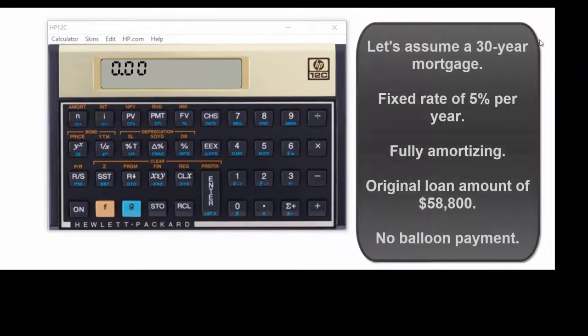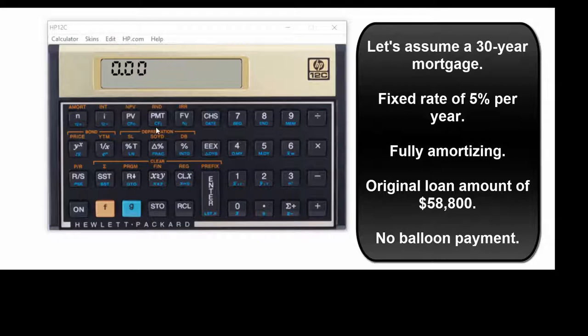Alright, let's do an example. Let's solve for the payment on a 30-year, 5% mortgage with an original principal balance of $58,800. We can plug them in in any order, but we're in this first row here.